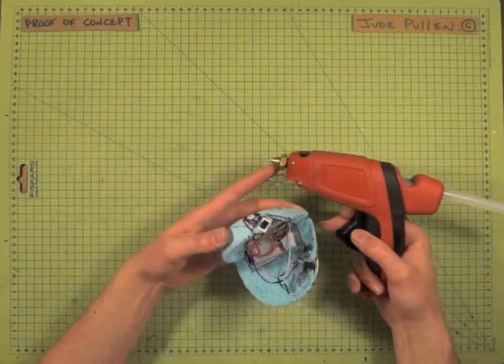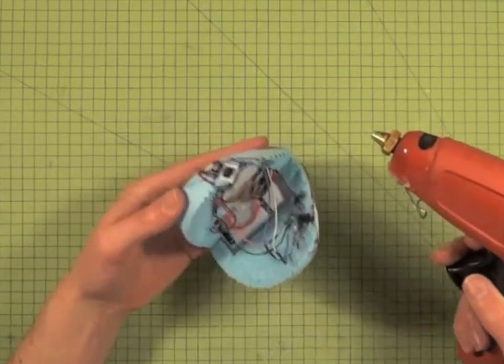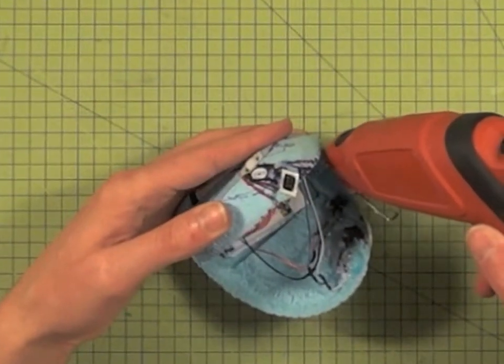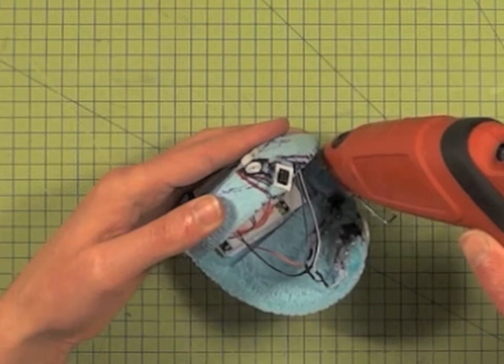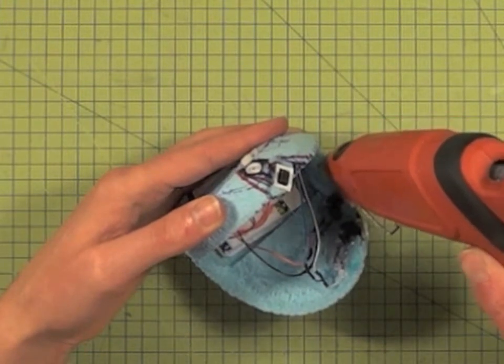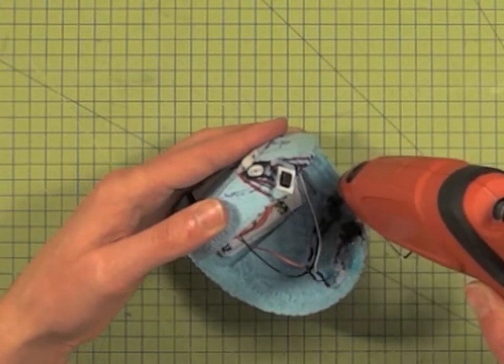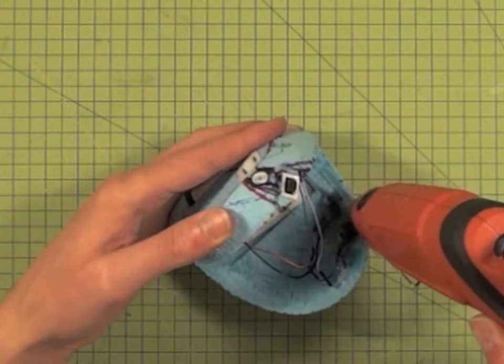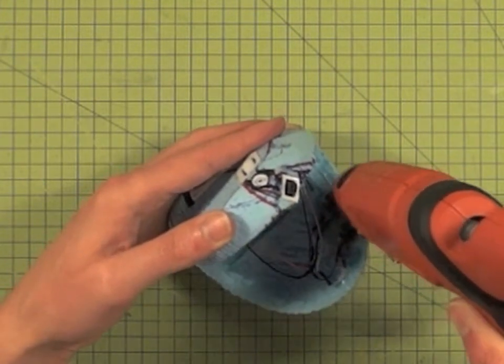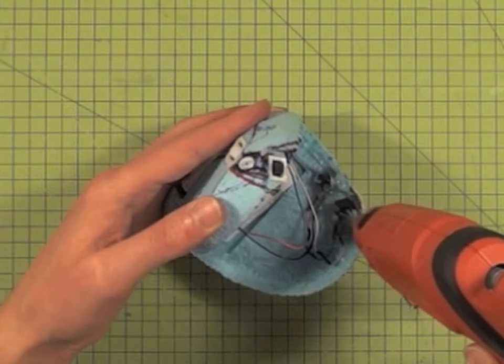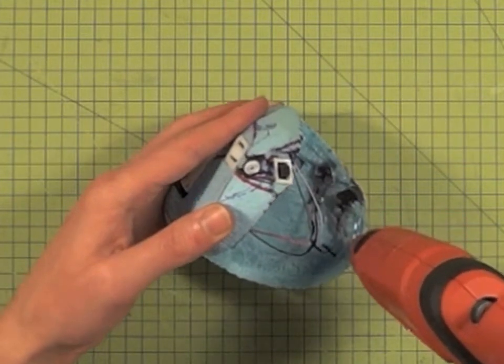So from then on, now we just need to run a bead of glue around the edge. And you can see, I'm just avoiding the switch a little bit there.